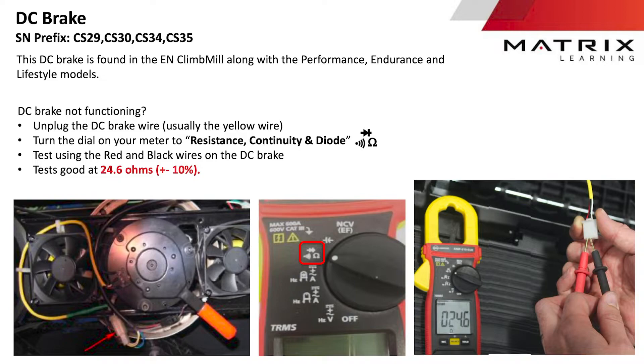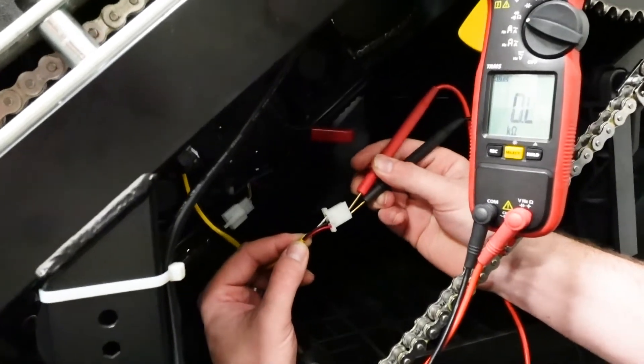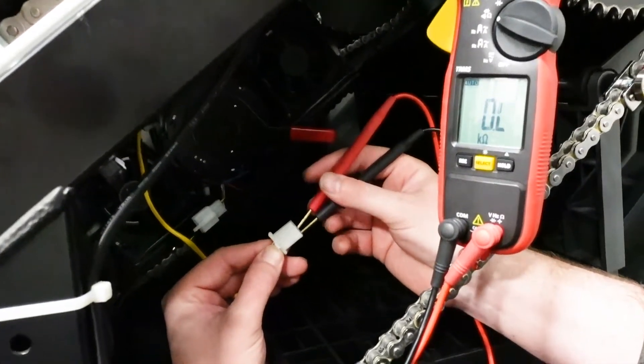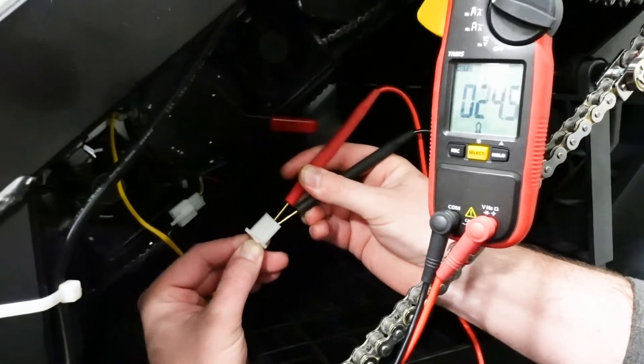Another important component on the climb mill is the DC brake. To test the brake on models CS29, 30, 34 and 35, test resistance on the black and red wires of the brake. A good working brake will show 24.6 ohms, plus minus 10%.